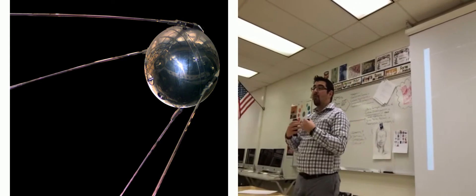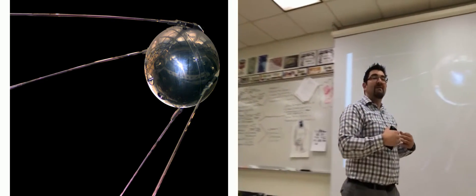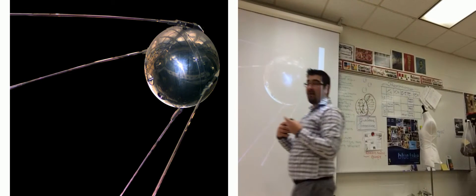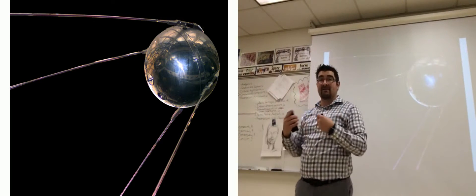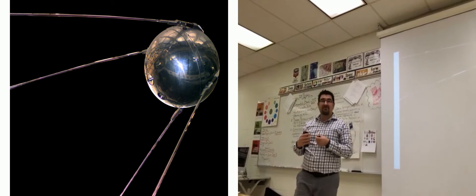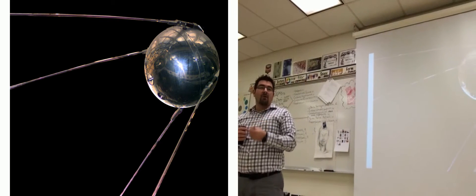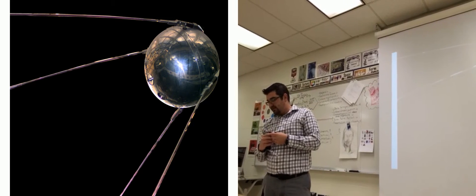Sputnik freaked America out. One of our responses in the education field was for the federal government to give a new push for the teaching of math and science and foreign languages. Because we didn't have enough Americans that spoke foreign languages — we had a lot of translating of documents to do, whether they be French or, more importantly, German at the time. Russian would be important too, but we'd have a hard time finding Russian teachers. There was a push to pay more attention to math and science education in the United States.